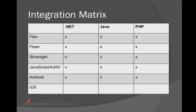First, the integration matrix. If you have a .NET backend, Java, or PHP — shown at the top header of this table — and the client-sides are shown on the left-hand side, everything that has an X is supported today. So if you're building a JavaScript Ajax application and need to integrate it with .NET, Java, or PHP, this is available. We don't currently provide integration with iOS, but that's something we're working on. Anything that doesn't have an X in the cells, our goal is to provide that functionality this year. iOS is coming later this year.